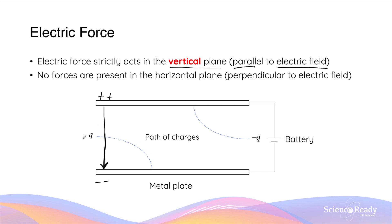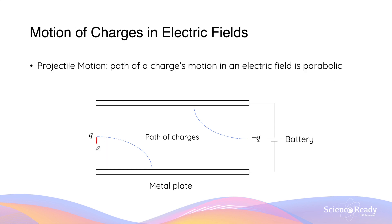Specifically, for a positive charge the electric force will act downwards towards the negatively charged plate, and for a negative charge the force will act upwards — again in a vertical direction parallel to the electric field lines. Notice how there are no forces present in the horizontal orientation; there are no forces perpendicular to the electric field. Since the forces are purely vertical, the motion the charges experience can be described as projectile motion, which is parabolic in shape.